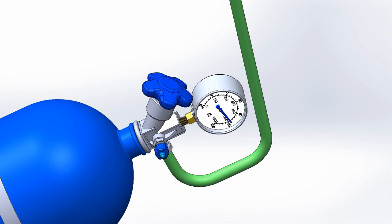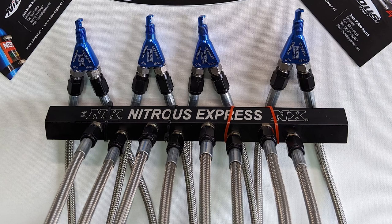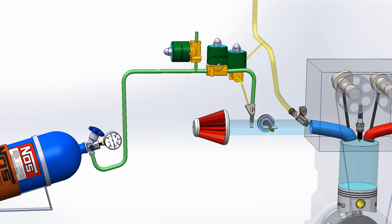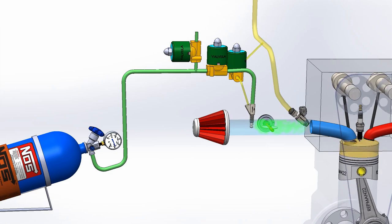In this video, we show the single fogger kits which are easier to install and work quite well, but in cases of maximum performance, multipoint kits should be installed. The fogger, instead of going before the throttle body, should be positioned in the intake manifold.